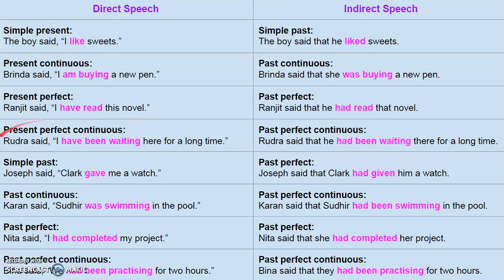Present perfect continuous will change into past perfect continuous. For example, 'Rudra said I have been waiting here for a long time.' 'Have been waiting' changes into 'had been waiting.' So the sentence becomes: 'Rudra said that he had been waiting there for a long time.'